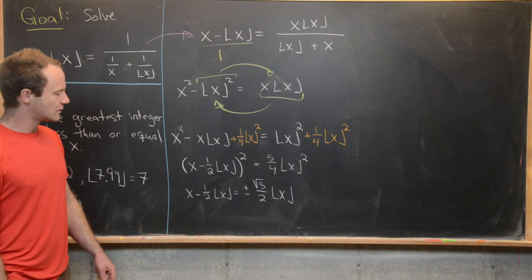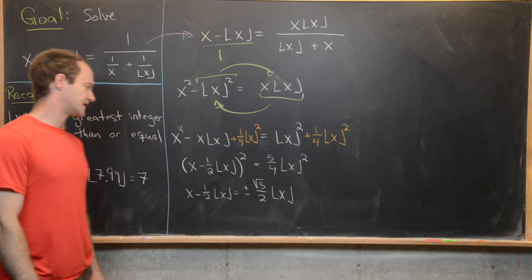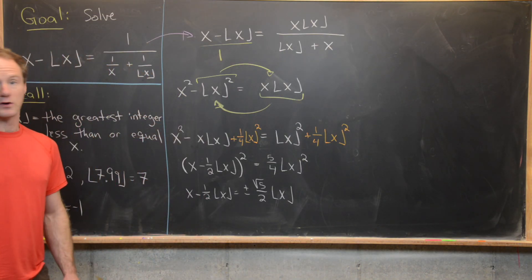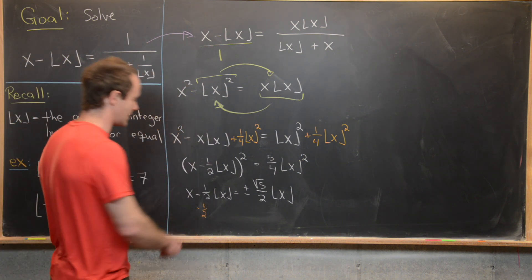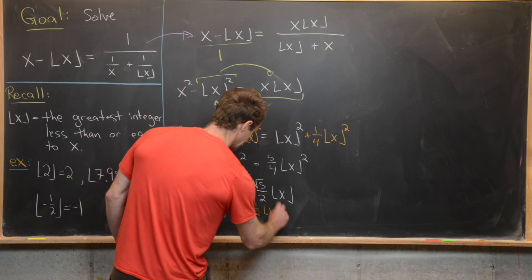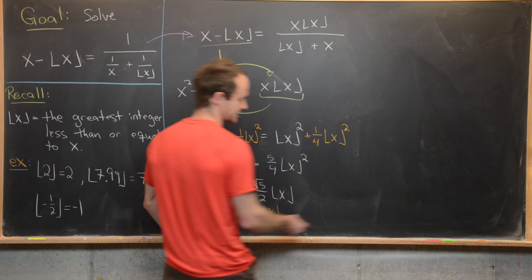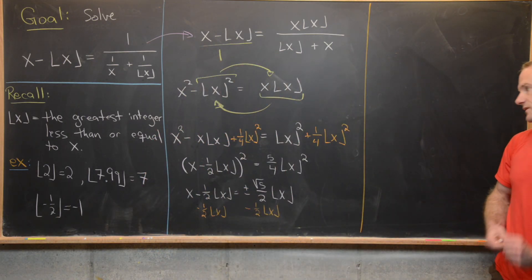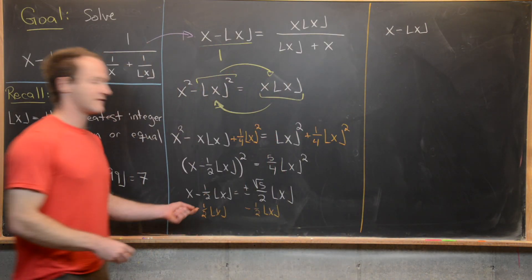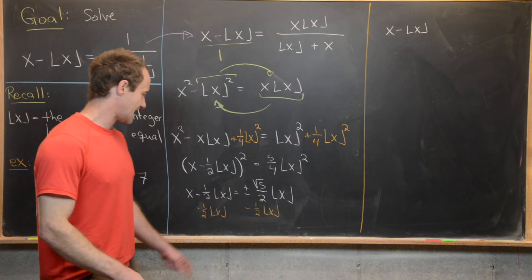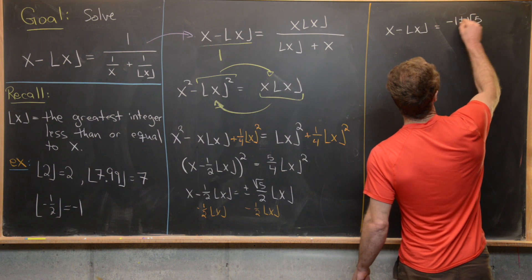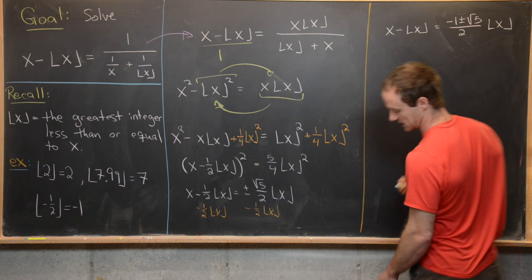Now we do a helpful trick: subtract one-half·floor(x) from both sides. On the left-hand side, minus one-half minus one-half gives minus 1, so we get x minus floor(x). On the right-hand side we get negative 1 plus or minus the square root of 5 over 2, times the floor of x.